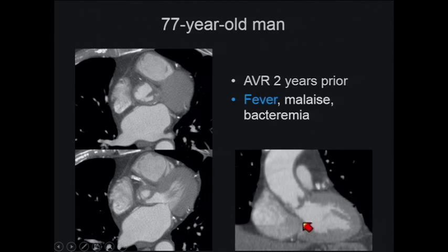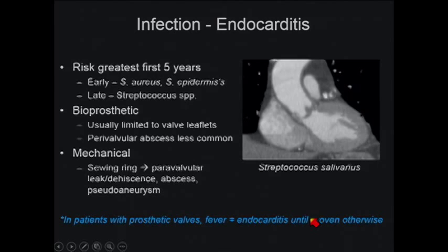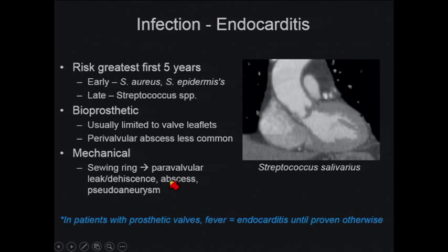Endocarditis can affect bioprosthetic or mechanical valves. Within the first couple of months you usually see Staph aureus, epidermidis, contamination from a prior abscess, or skin contamination. Later, it follows a natural history like native valve endocarditis. With bioprosthetic valves it's usually limited to the leaflets, but with mechanical valves you start to see extension into the paravalvular tissues — abscess, breakdown, dehiscence, pseudoaneurysm. A good rule of thumb: fever is endocarditis in these patients until proven otherwise.